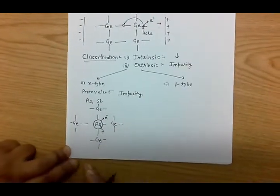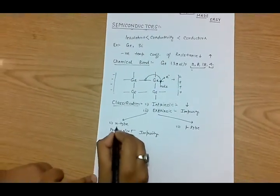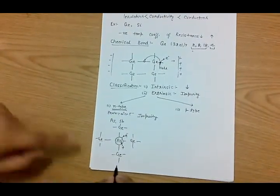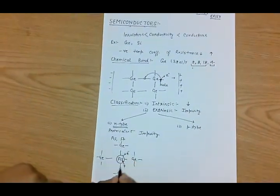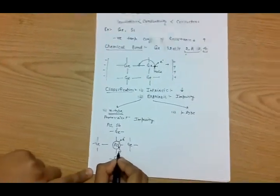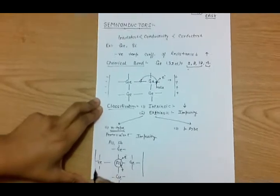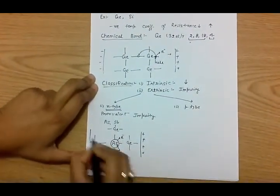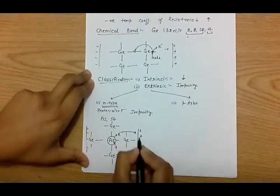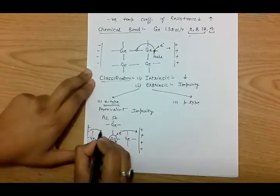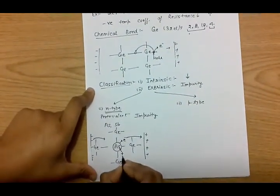These free electrons are responsible for the conductivity of the material, and since they are negatively charged, this type of material is called N-type. However, this does not mean the semiconductor becomes negatively charged — the number of negatively charged electrons generated is the same as the number of positively charged impurity ions formed. So as a whole the material is neutral. When an electric field is applied, the number of electrons pulled by one electrode equals those supplied from the other, keeping the material neutral.